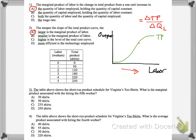So, now we're going to go to three. The table shows the short run product schedule for Virginia's t-shirts. What is the marginal product associated with hiring the fifth worker? So, hiring the fifth worker, marginal, remember, always think of marginal as change. So, what's the difference between the product between the fourth and fifth worker? So, if you have four workers, you can produce 220. If you have five workers, you can produce 250. So, the marginal product would be 250 minus 220, which would be 30 shirts.